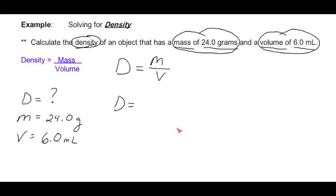Well, we know the mass that has been given to us and we can write that directly into the equation, 24.0 grams, divided by the volume which is 6.0 milliliters.